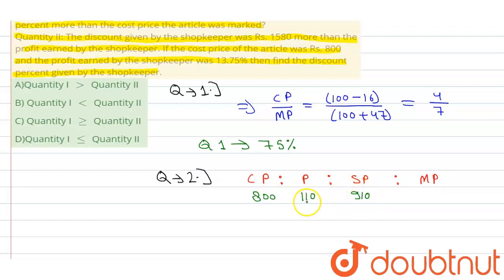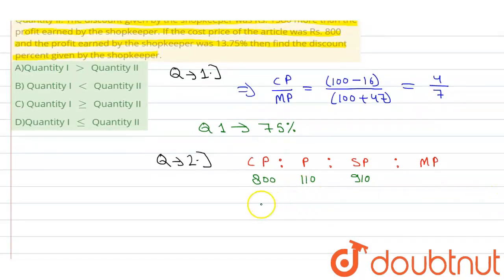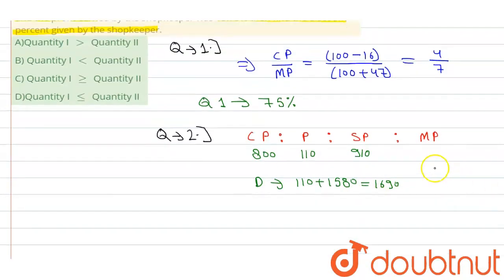Now the discount given is Rs. 1580 more than this profit. So we calculate the discount value. The discount value will be 110 plus 1580, which equals 1690. If the discount is 1690, then we add 1690 plus 910 to get the mark price of Rs. 2600.